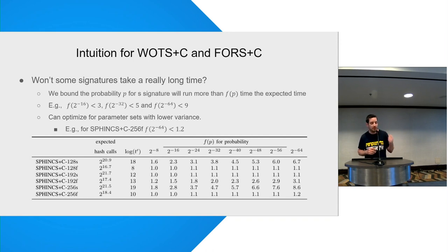So the distribution is very, very dense around the expected time. And we can actually optimize the parameters that we choose for the scheme in order to make it as efficient as possible. And we have, for example, one variant that will never take more than 1.2 times the expected running time. So it's variable, but it's still okay.